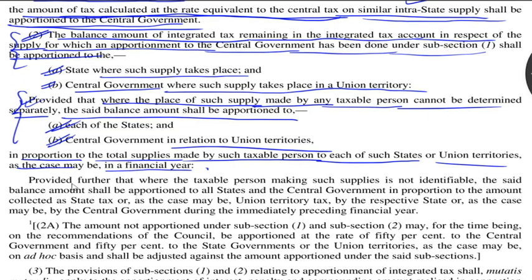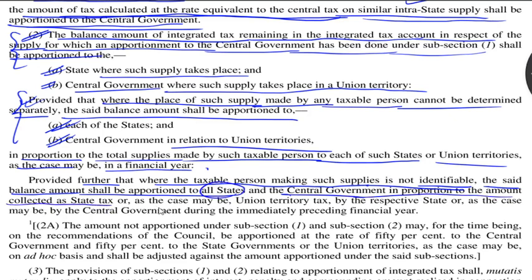The proviso further states that where the taxable person making such supplies is not identifiable, the said balance amount shall be apportioned to all states and the central government in proportion to the amount collected as state tax, or as the case may be union territory tax, by the respective state or central government during the immediately preceding financial year. This proviso prescribes what applies where the taxable person making such supplies is not identifiable.